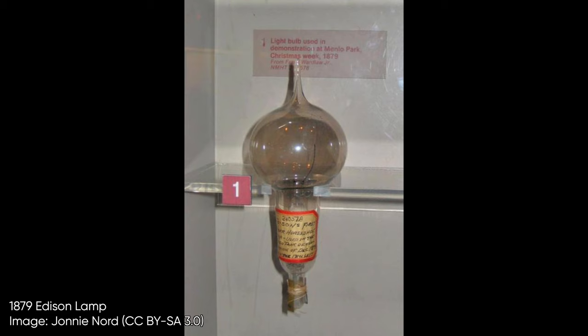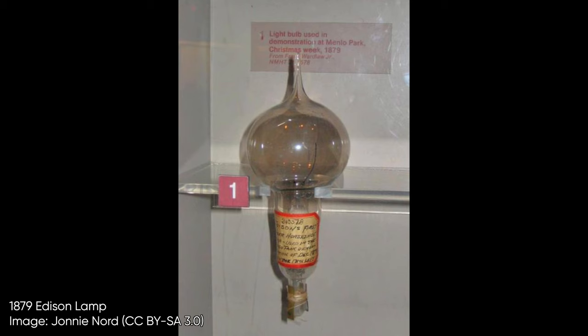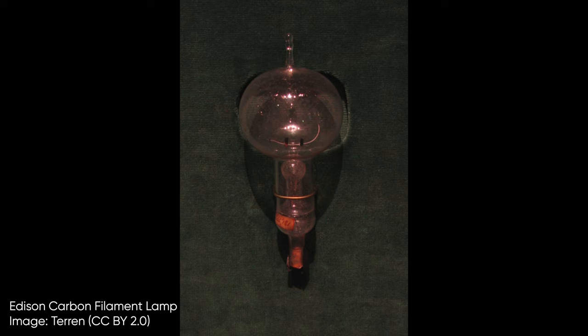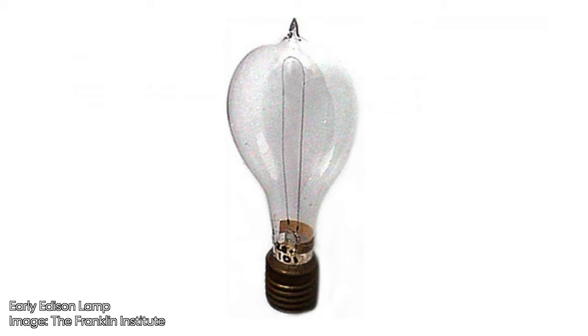In late 1879, Edison swapped the platinum filament for carbon. He expected it to last for a few hours, but it ended up burning for two days straight. After testing nearly 6,000 materials, he settled on carbonized bamboo, which could burn for more than 1200 hours. Edison's patent was approved in January 1880, and he quickly went public with it.